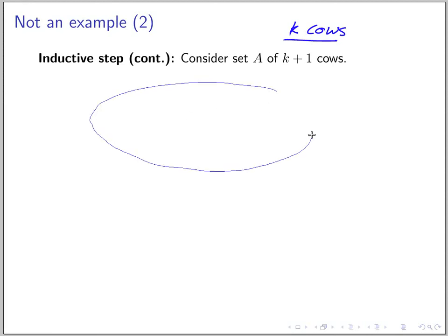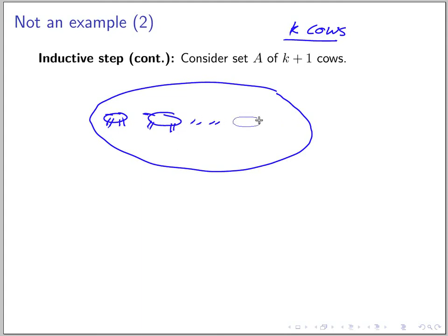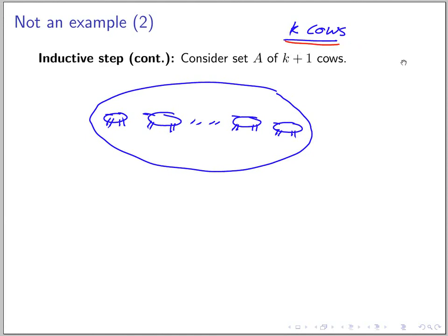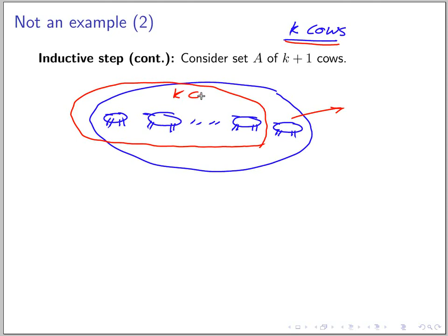So let's look at set A of K plus one cows. You have the first cow, the second cow, and so on, the Kth cow, and the last one — the K plus one cow. We want to prove that in this set all cows have the same color. Because of the induction hypothesis, we know that every set of K cows all have the same color. So let's leave the last cow out for a minute — this is a set of K cows, and by the induction hypothesis, all these cows have the same color.